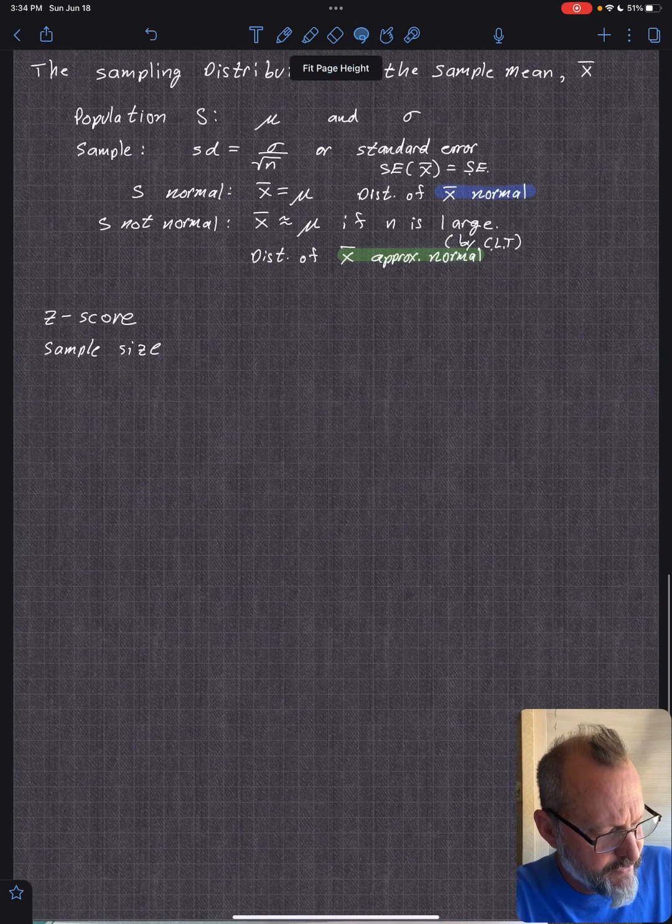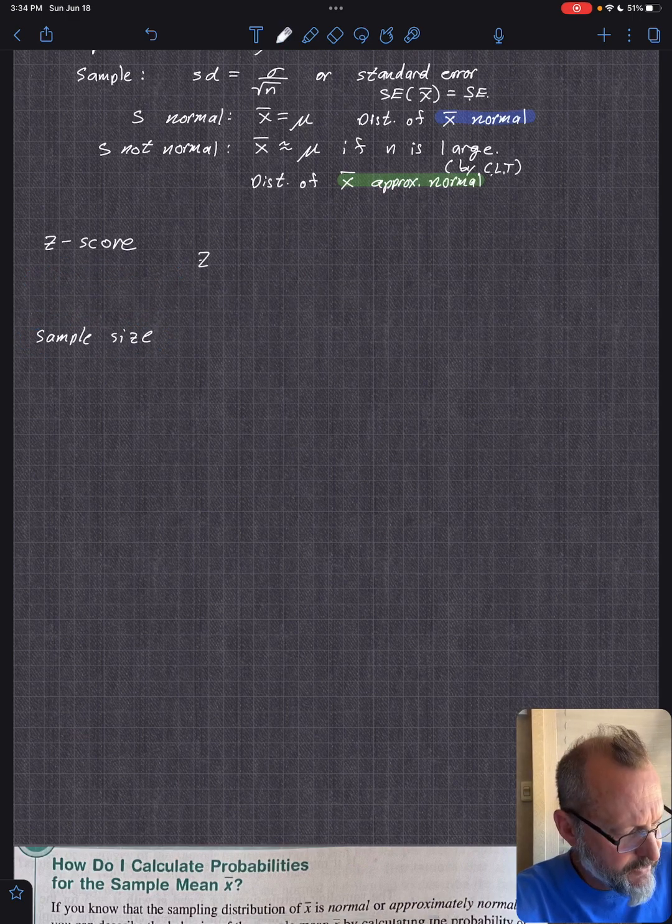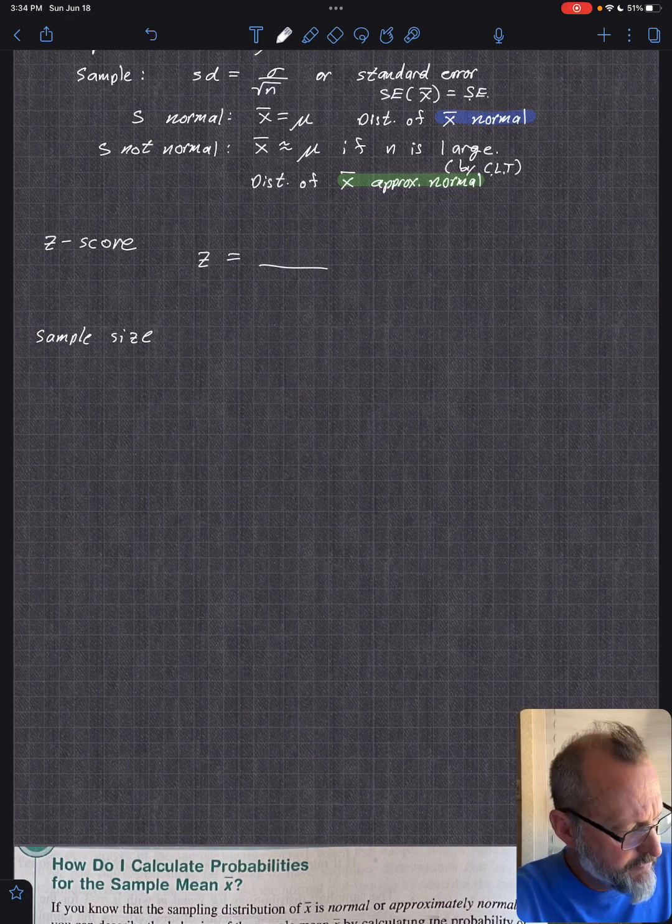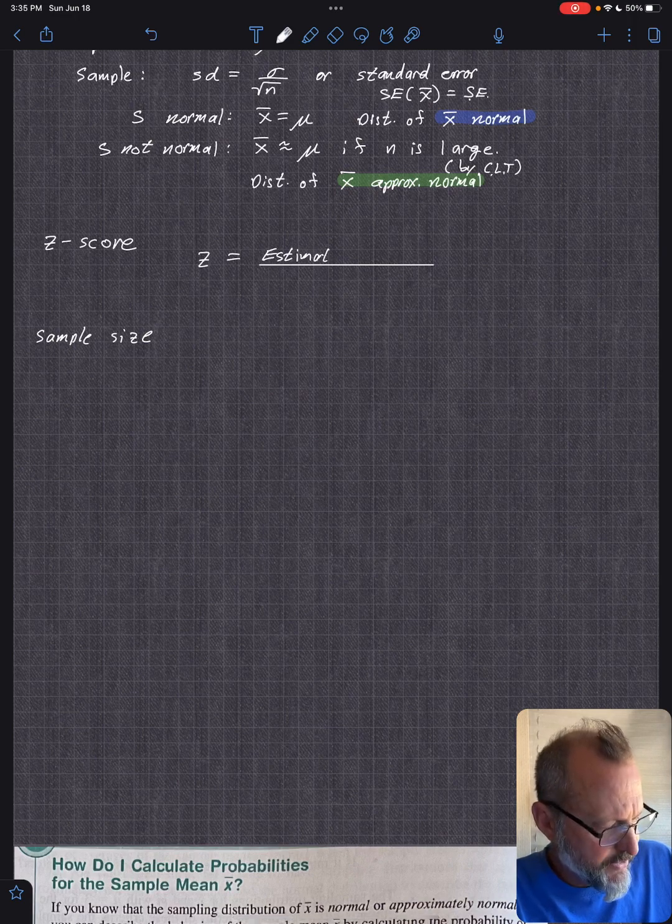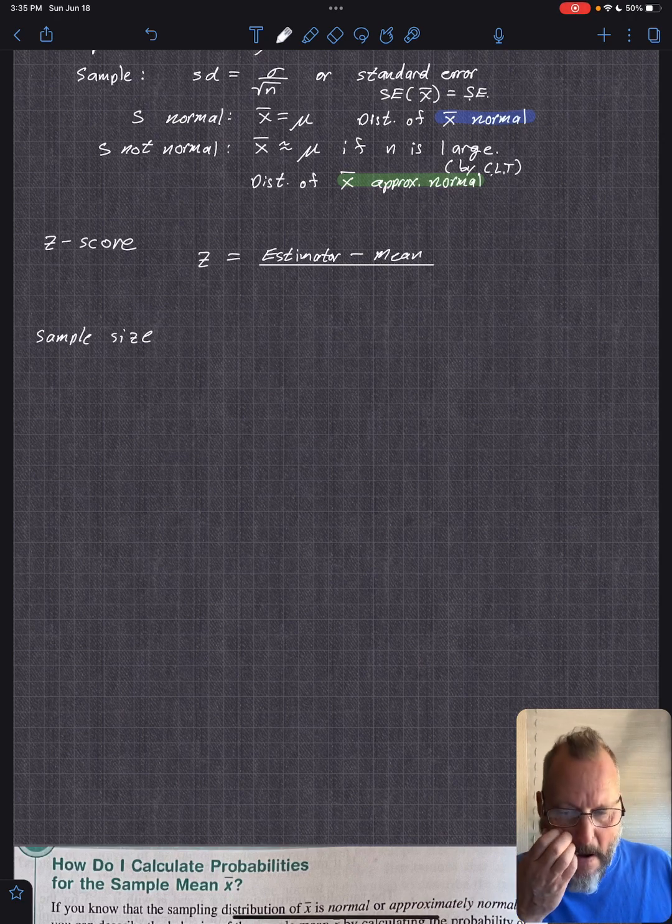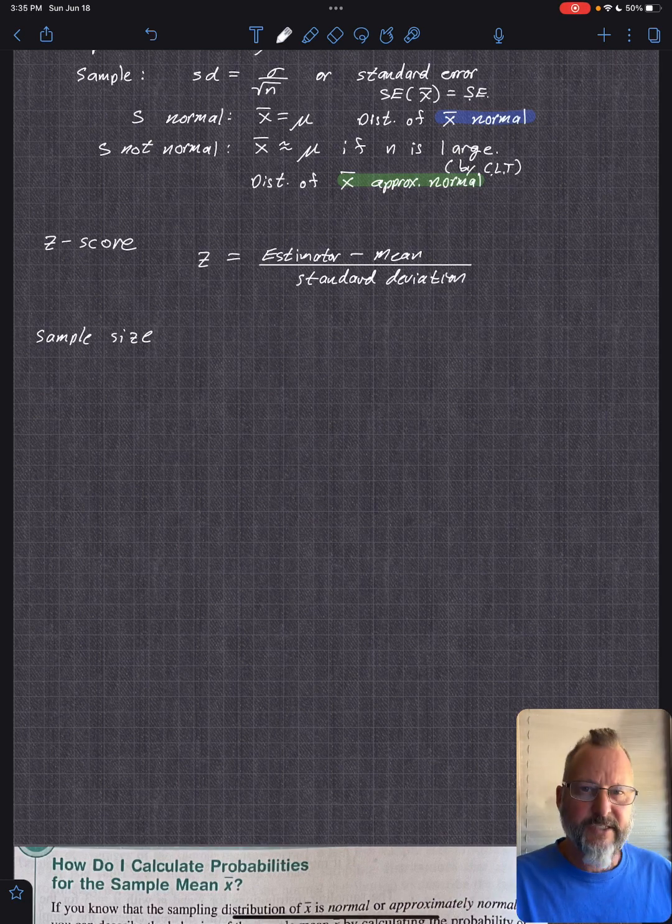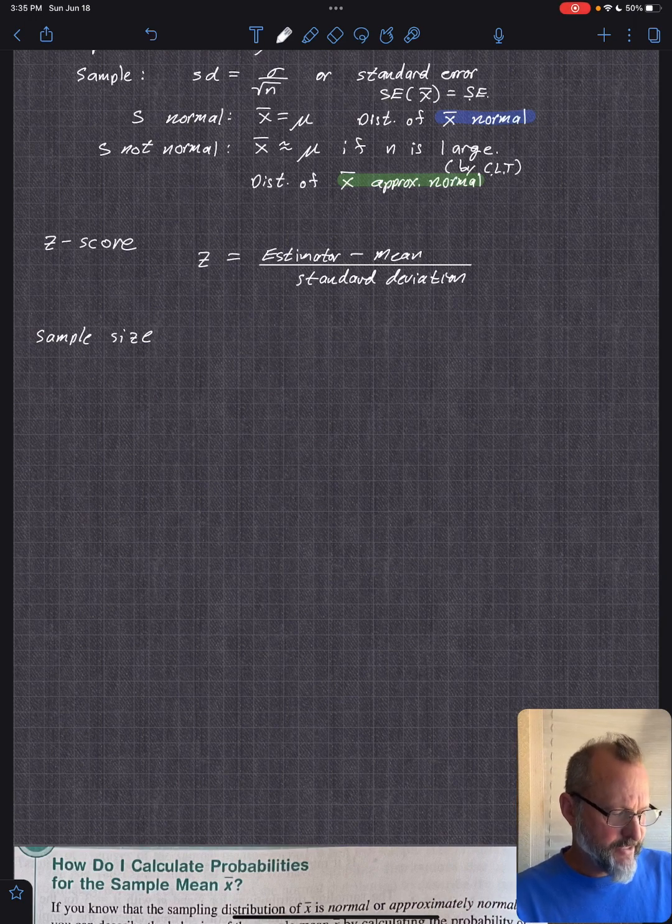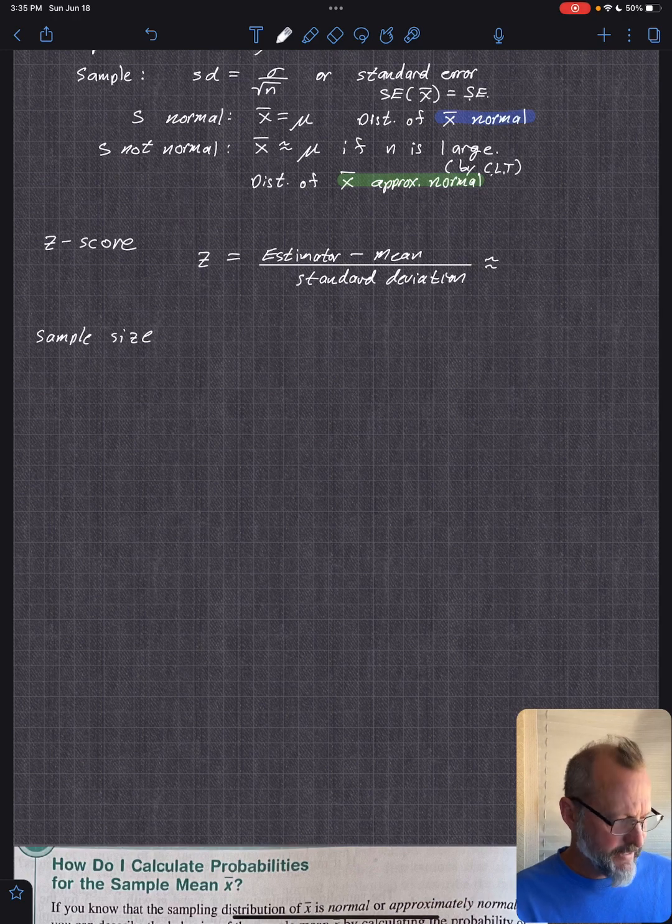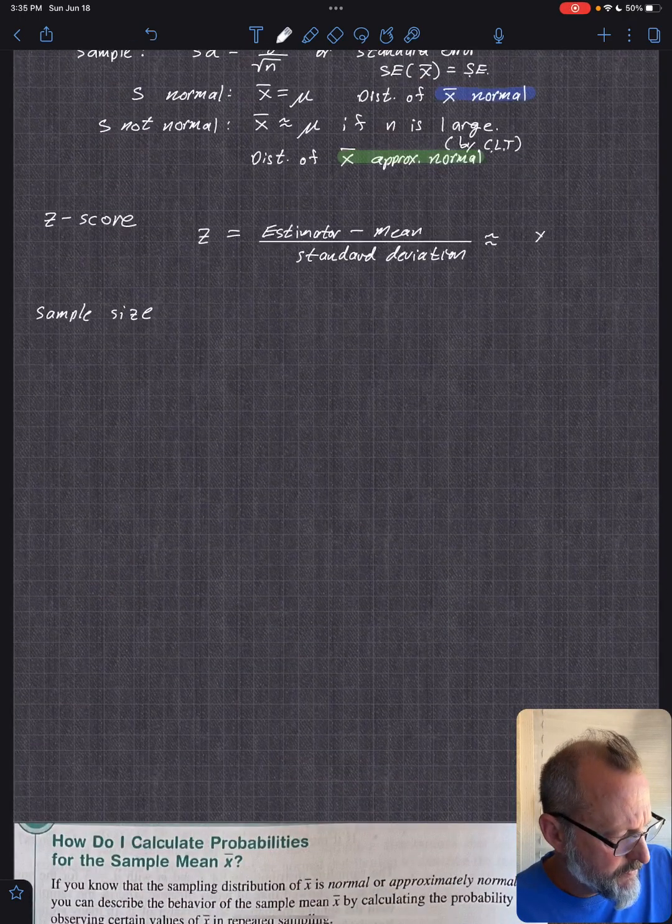When you calculate a Z score for this, for X bar, we'll talk about sample size as well. Then what you do is you calculate Z is the estimator. So it is the estimator minus the mean divided by the standard deviation. You'll take X bar minus mu.